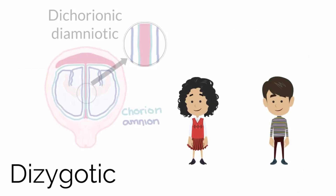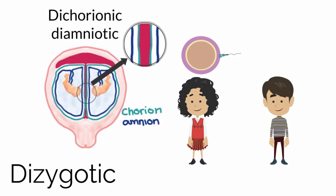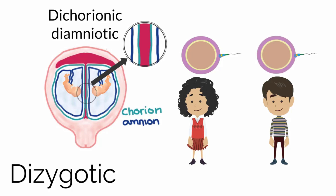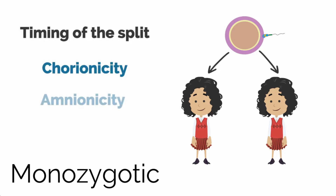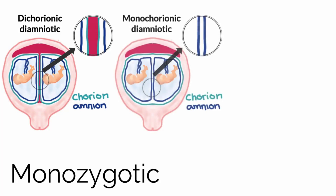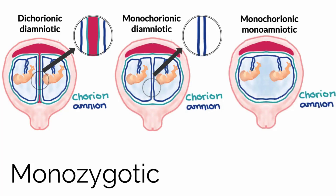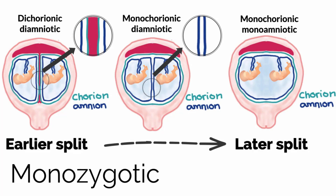Note that all dizygotic twins are dichorionic-diamniotic, as there are two zygotes from the start with fertilization instead of a split during development. The timing of the split in monozygotic twinning determines the chorionicity and amnionicity — the number of chorions and amnions — of the resulting twins. In general, the earlier the split, the fewer structures are shared, as cells early in development have not yet differentiated. The later the split occurs, the more structures are differentiated and will be shared by the monozygotic twins.